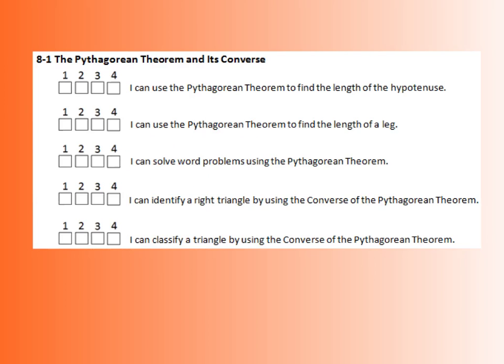We then will look at the converse of Pythagorean Theorem to identify whether something is a right triangle, and then to classify it if it's not a right triangle as either acute or obtuse.